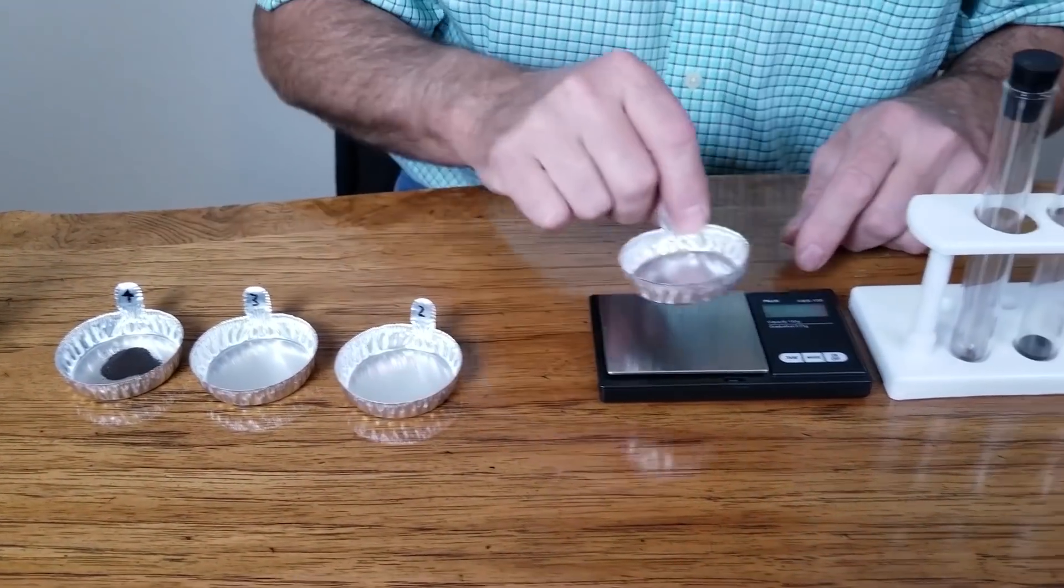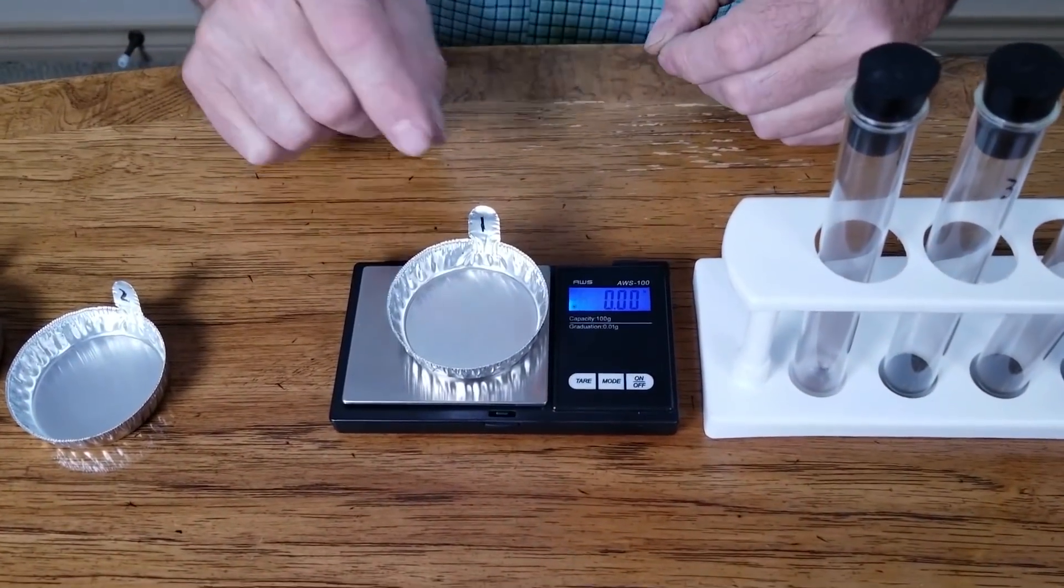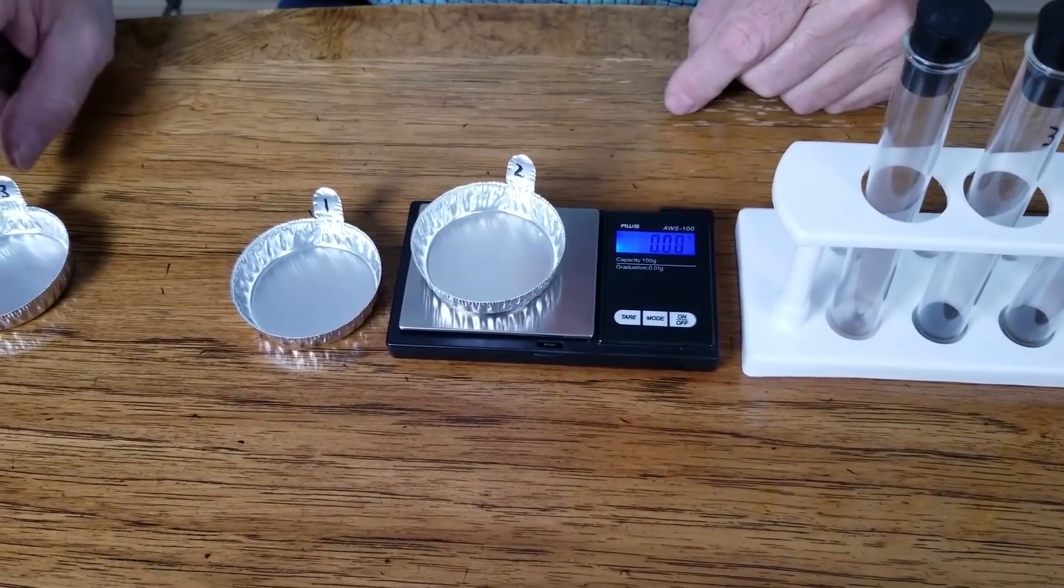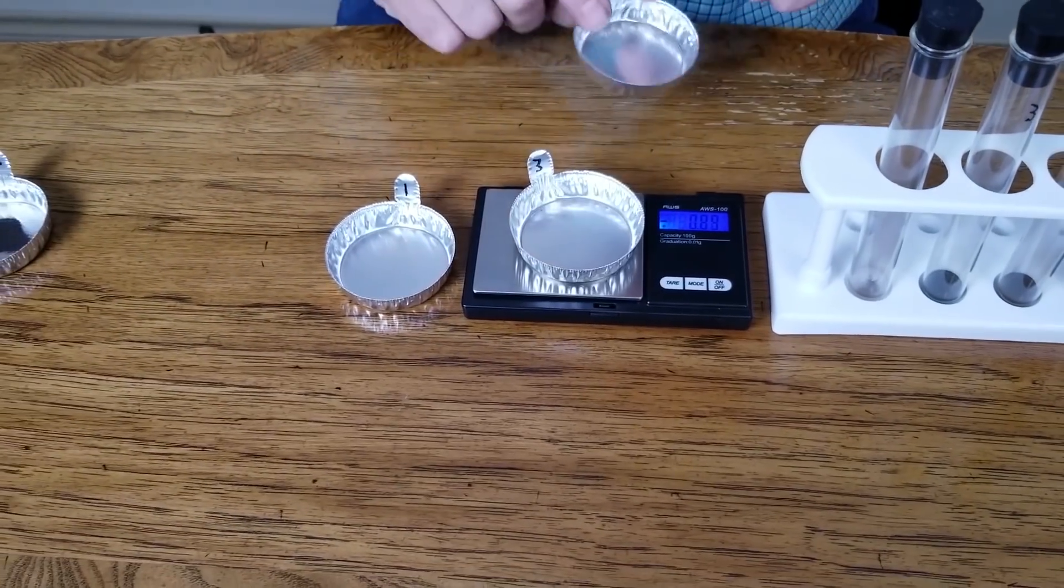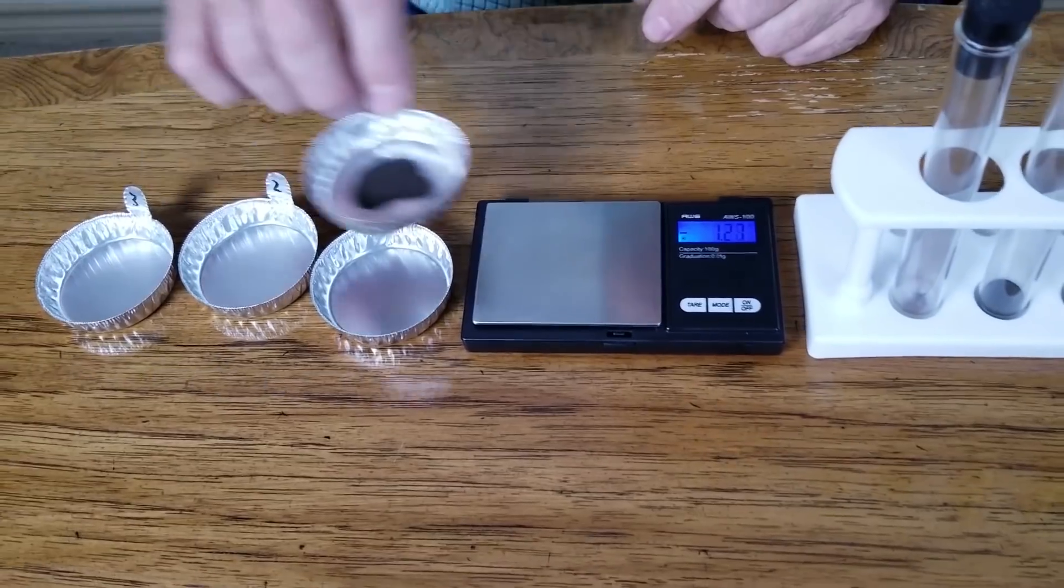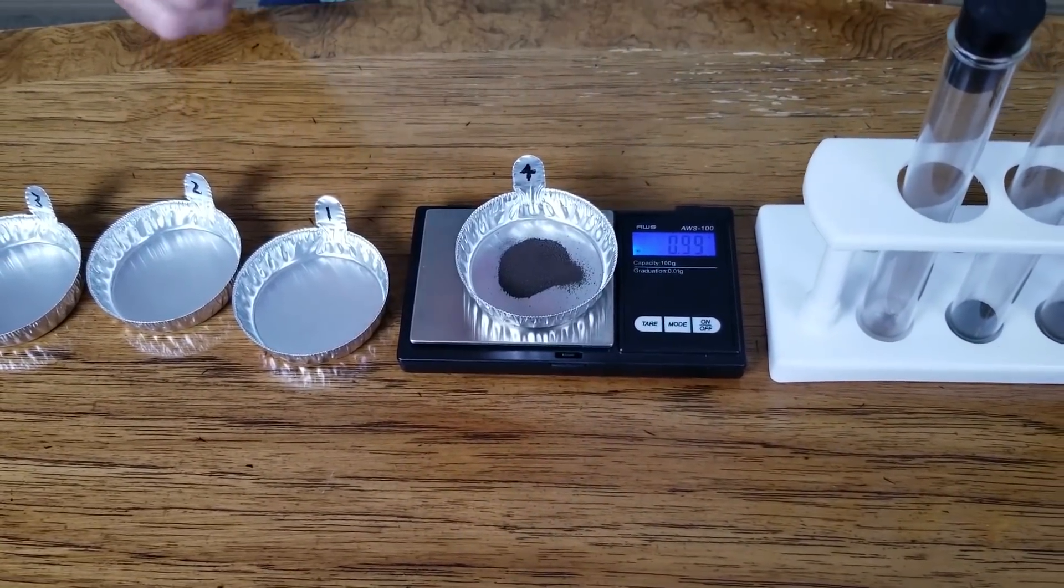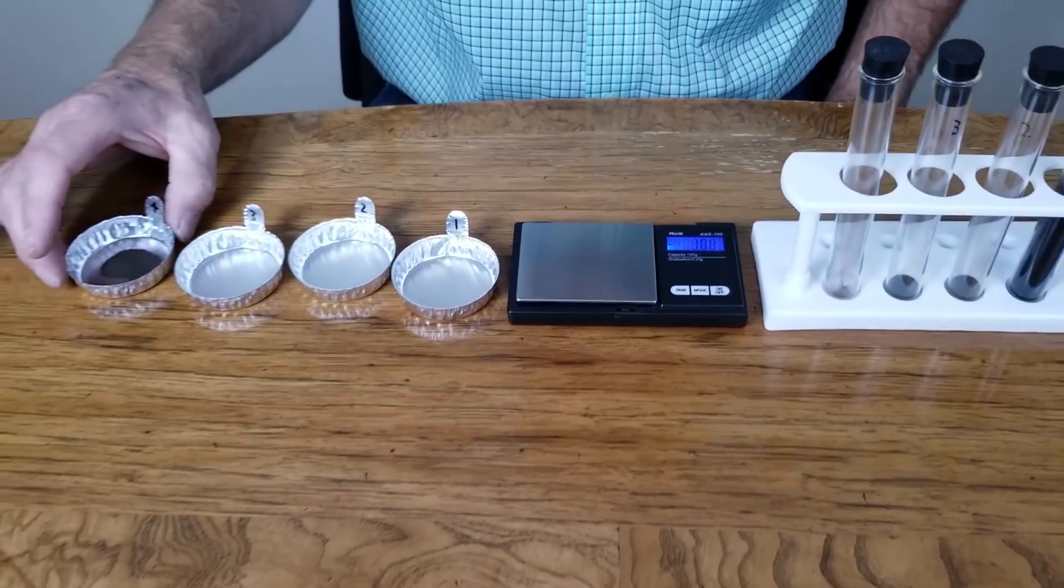And we want to tare that out on the scale here. We'll tare that out. These all weigh the same as you can see. They're all zero. I'll do the other one. Number three, they all weigh the same, these trays. So this tray here, what we poured the powder in, we've got about right at 0.99 grams of a powder that came out of there.